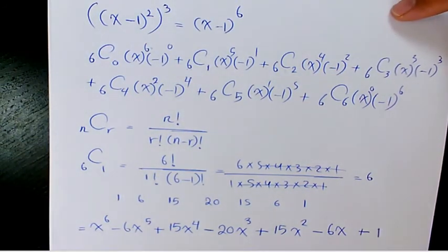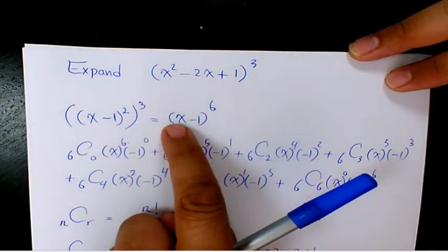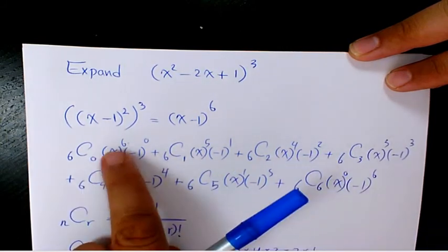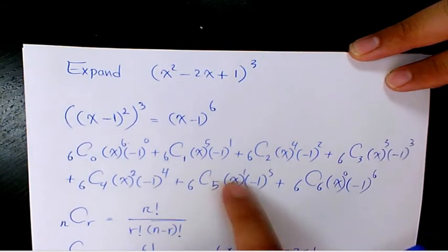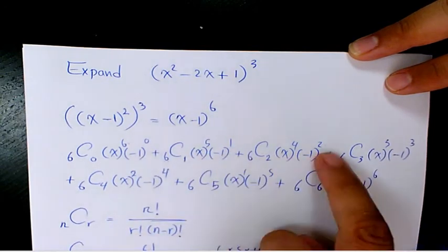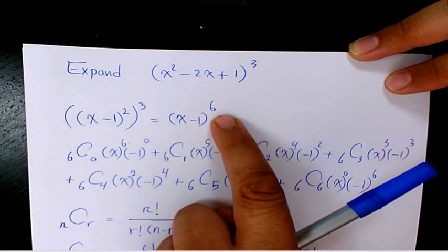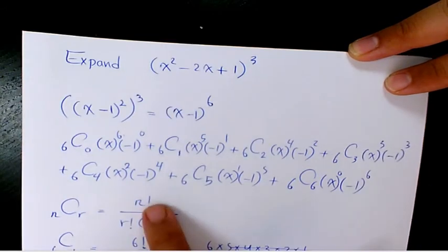20x to the power of 3 plus 15x to the power of 2 minus 6x plus 1. So that's going to be the expansion of x squared minus 2x plus 1 to the power of 3. As you see here, when you expand it, the exponent of the first term is reducing, which is 6, 5, 4, 3, 2, 1, 0. And the exponent of the second term is increasing, 0, 1, 2, 3, 4, 5, 6. And the index of this expansion is 6. So we're going to end up having 7 terms.